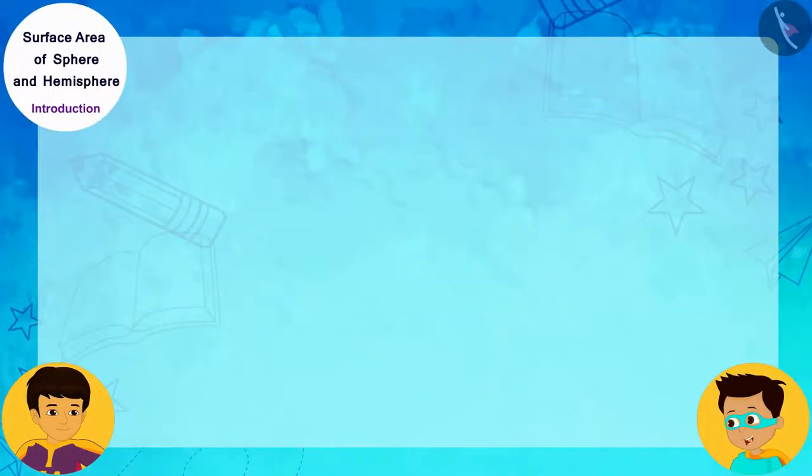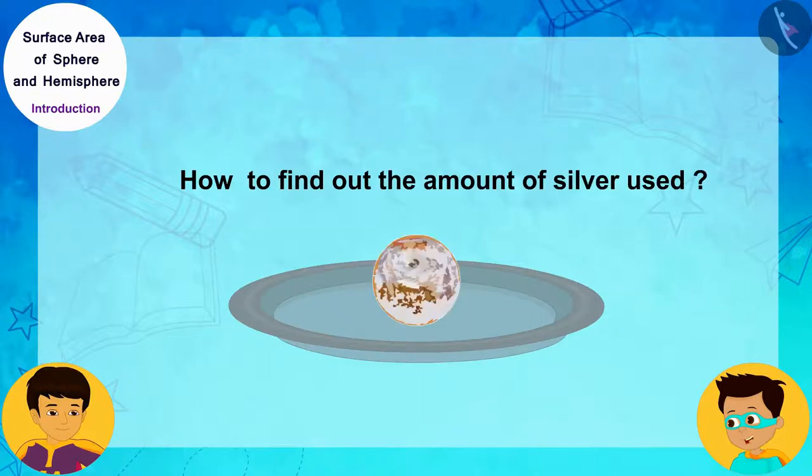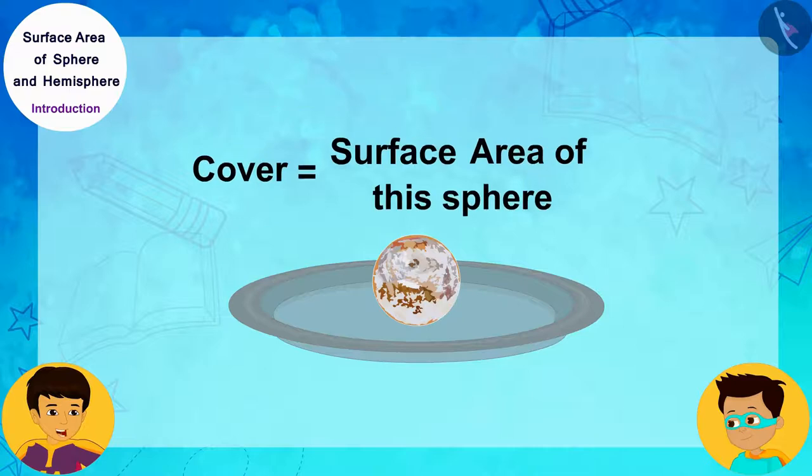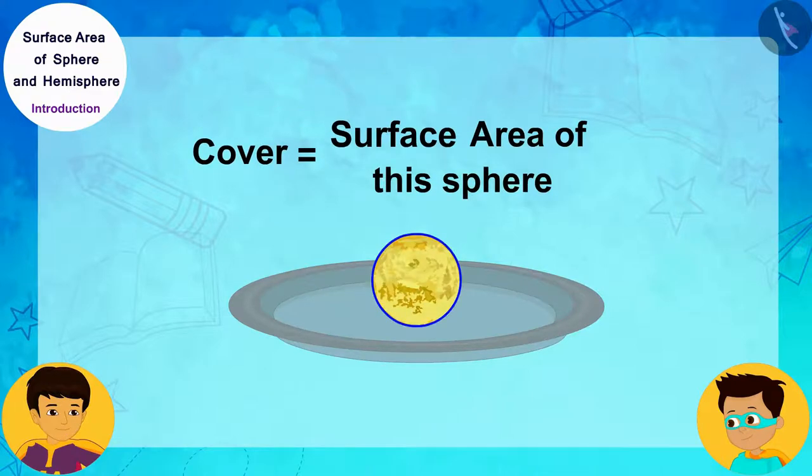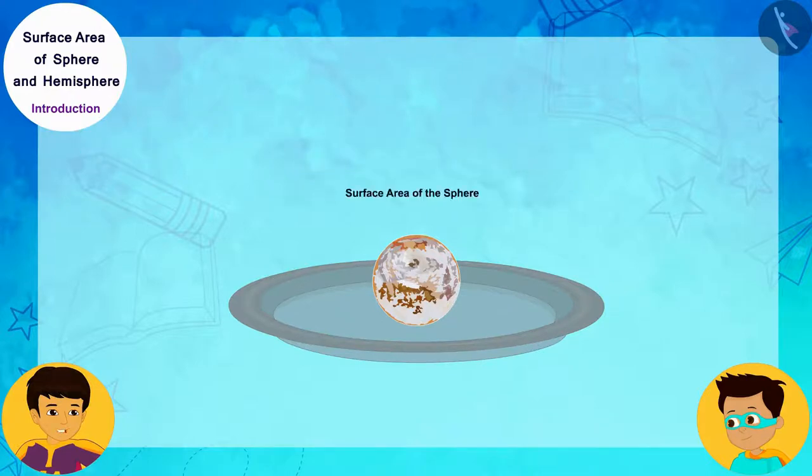Alright, I understood about the sphere, but how will we find out the amount of silver used to cover this spherical sweet? The silver is completely covering the total surface of the sphere, so we can say that the silver used to cover the spherical sweet will be equal to the surface area of this sphere. Hmm, you are right, but how do we find the surface area of the sphere? We do not know its formula. Now, then, let us find the formula for the surface area of a sphere.